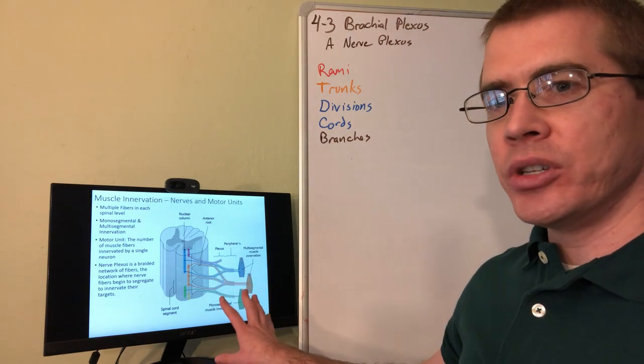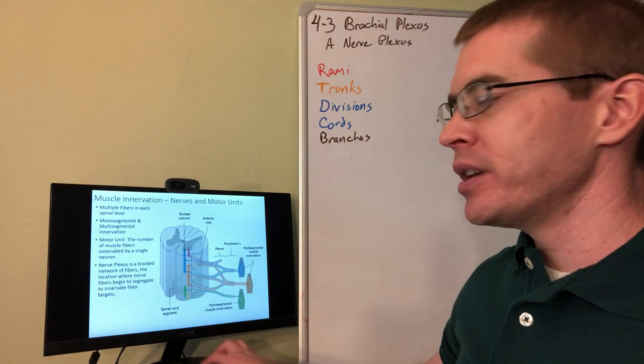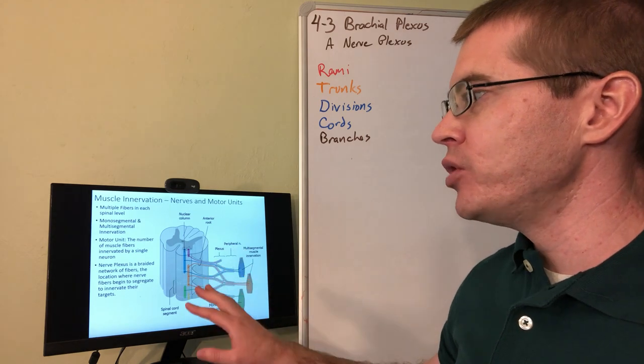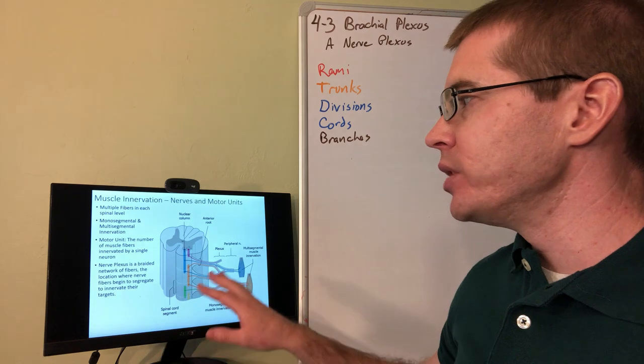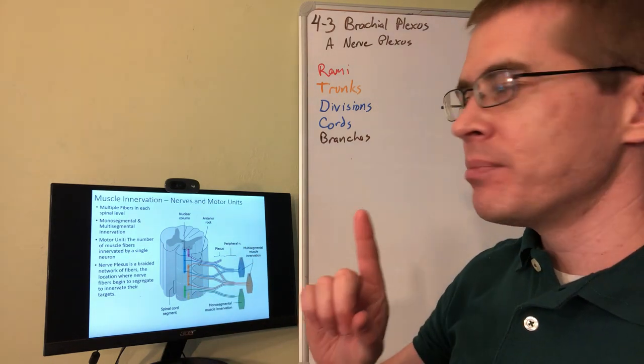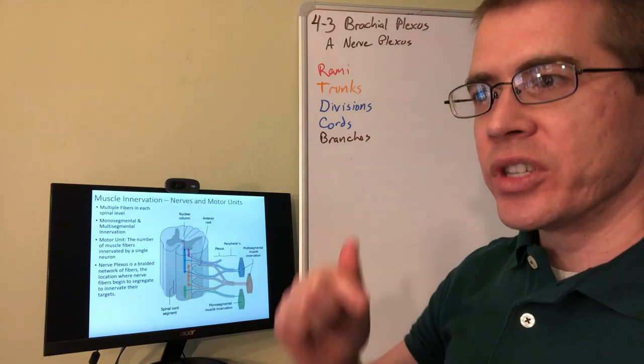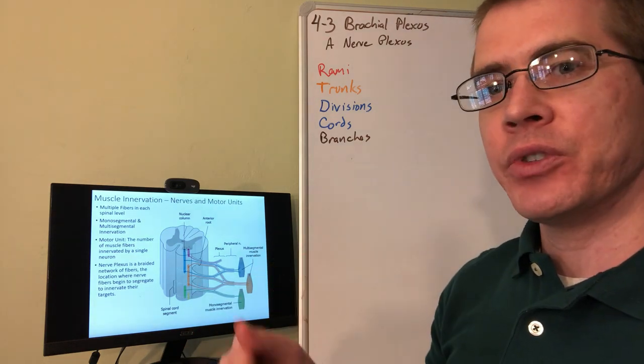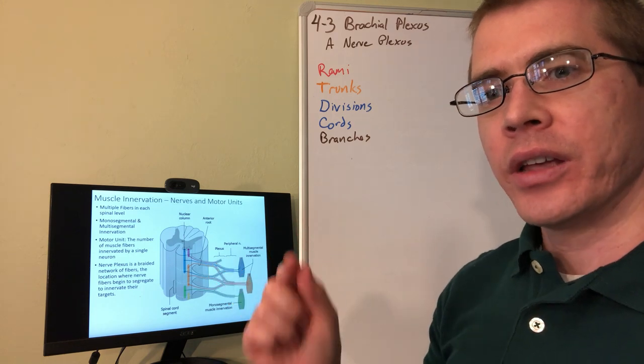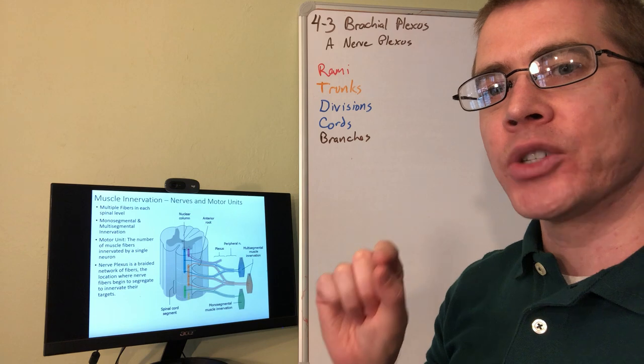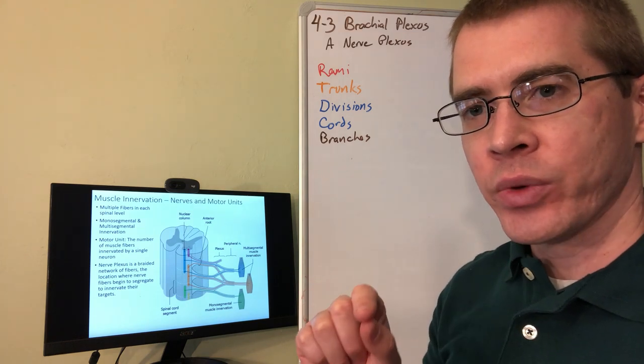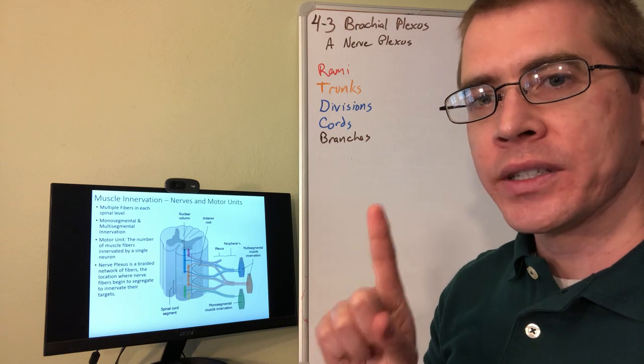There's another important concept to understand in terms of motor output, and that's the idea of the motor unit number. The motor unit is the number of muscle fibers that's innervated by one single neuron. So this is the same concept as the receptive field, how big of an area is innervated by one neuron, except in this case it's how many individual muscle cells are innervated and contract with the activity of one single neuron.